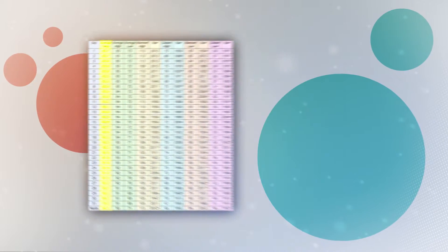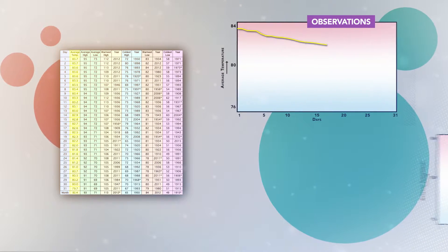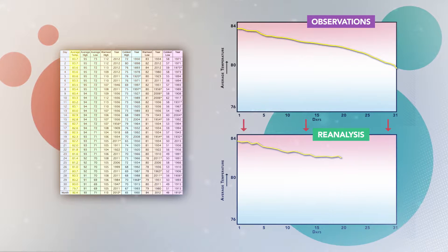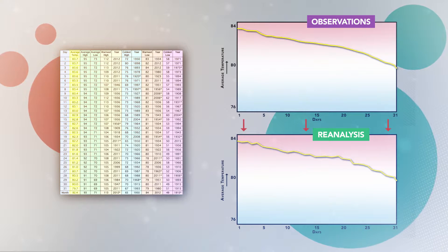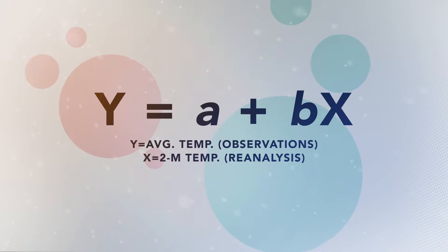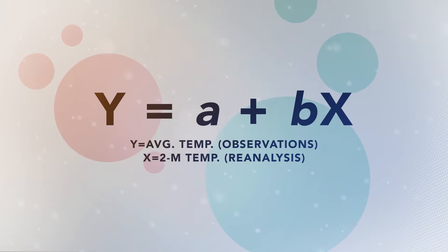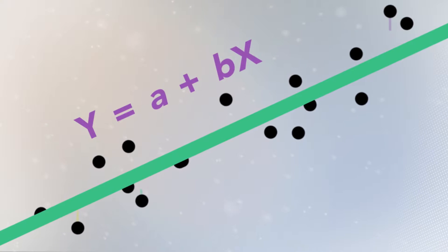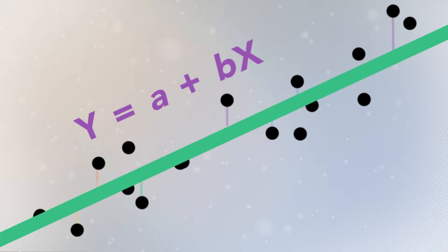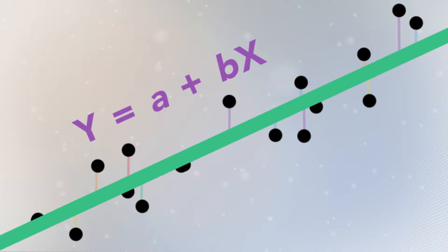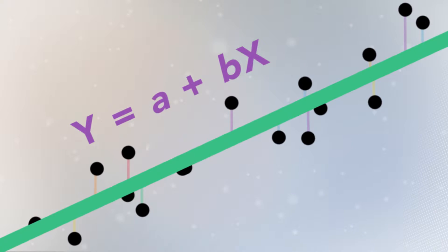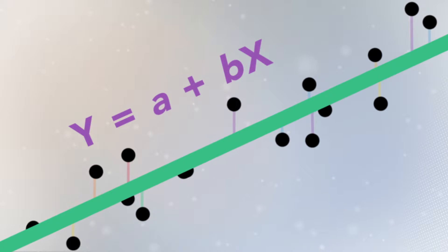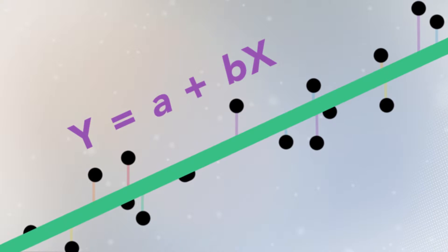Then, we will extract physically relevant predictors from historical reanalysis products that are synced in time with our observations. We then can fit a regression equation between our target and the predictor or predictors. After obtaining the best fit equation, we can calculate the error and correlation between the downscaled time series and the target, giving us an understanding of how well this equation represents the historical record.